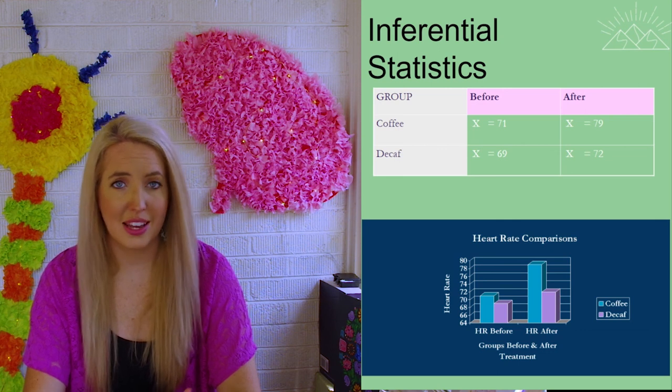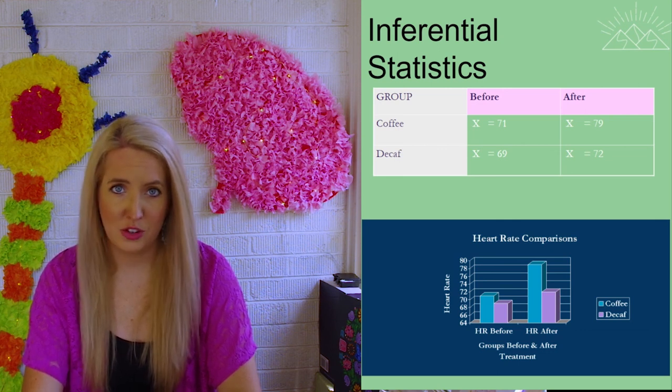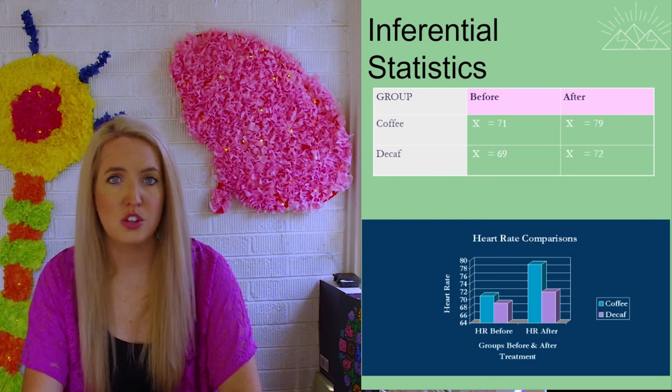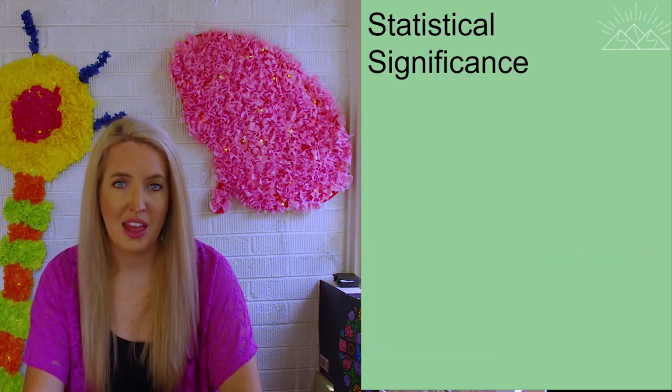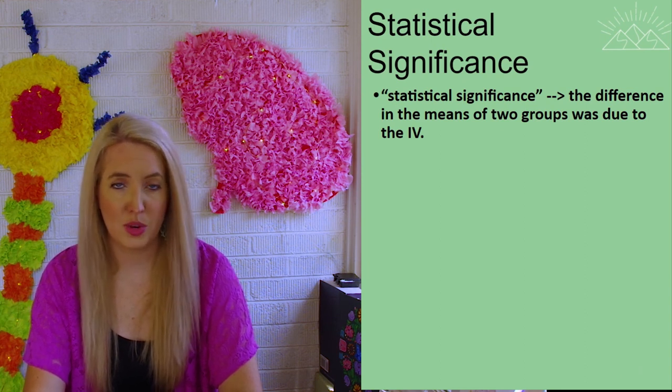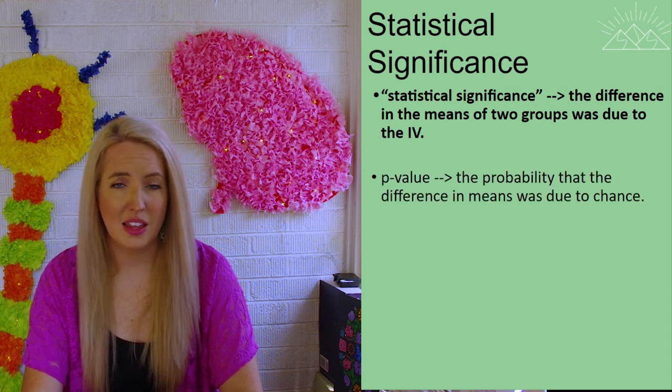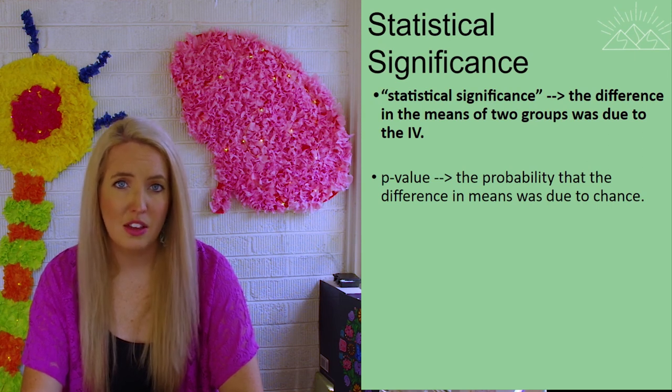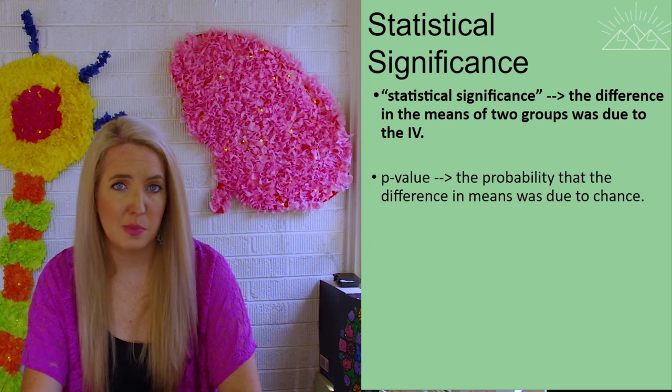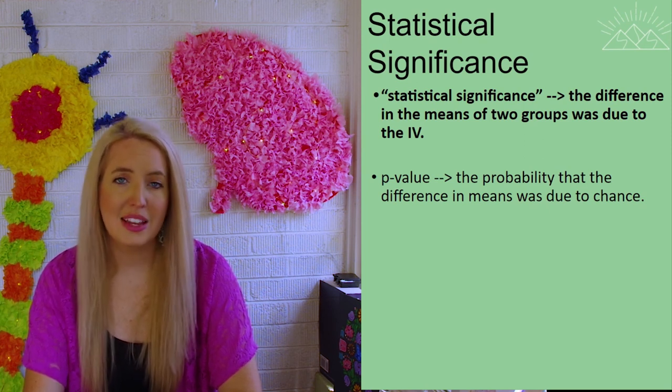And luckily for us in psychology, we're not going to have to do the math. But eventually what we're going to end up with is what's known as a p-value. And a p-value shows us the statistical significance of our research data. Basically what it's telling us is the probability that our results are actually due to what we did in the experiment, and how much was actually due to chance.